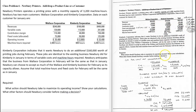So first we figure out the contribution margin per unit of the constraint. From Wallace, we have a contribution margin of $110,400 divided by the constraint of 2,400 machine hours — that's $46 per machine hour. From Kimberly, we've got $48,000 of contribution margin divided by 800 machine hours, which is $60 per machine hour. So per the constrained resource, Kimberly would be the one that makes the most money for us.